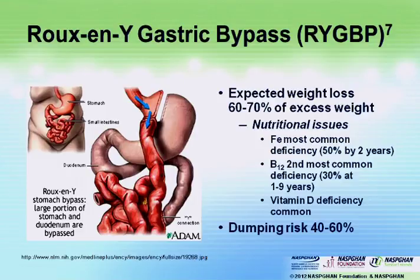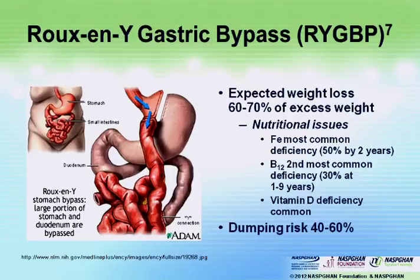Moving from the sleeve plus malabsorption — which is what you get with the Roux-en-Y gastric bypass — the stomach becomes small and you're bypassing a fair amount of the small bowel, but still leaving continuity with the duodenum and pancreatic duct. Weight loss is about 60–70%. There are more nutritional issues because you're restricting the stomach plus malabsorbing. Iron deficiency is most common, about half of patients by two years. B12 is second most common — about 30% at one to nine years, and this can be very hard to pick up. Vitamin D deficiency is common, and dumping occurs in about 40–60%.